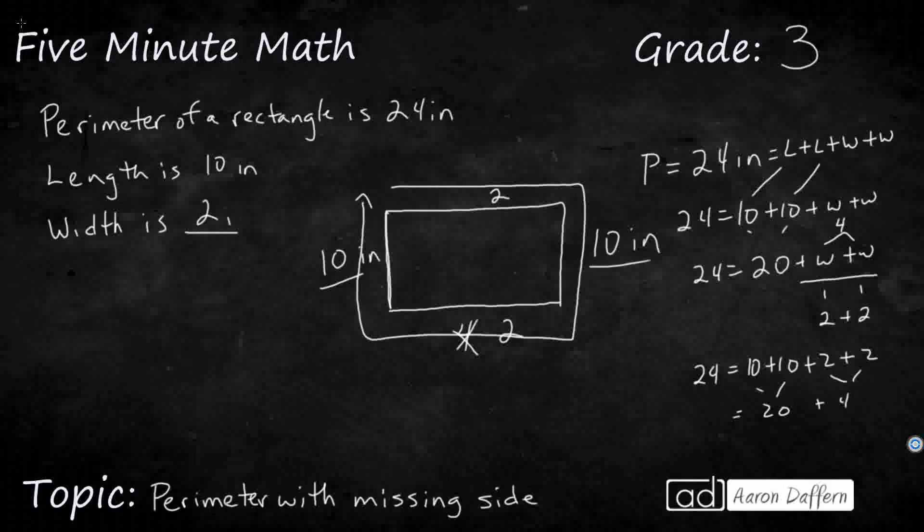So my width is 2 inches, so that actually wasn't a very good drawing. It would be a lot skinnier, be more like this, right? There's my 2, and there's my 10. But that's how we can draw a picture, given the perimeter, and one side length, to find another side length.